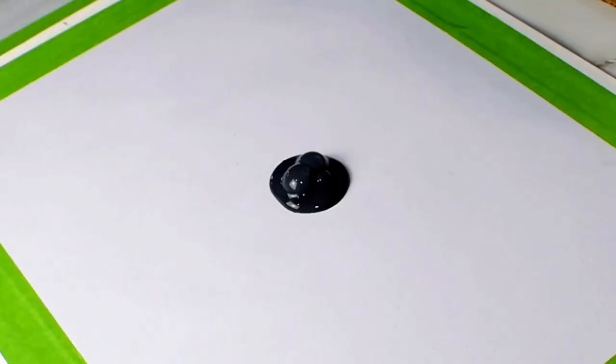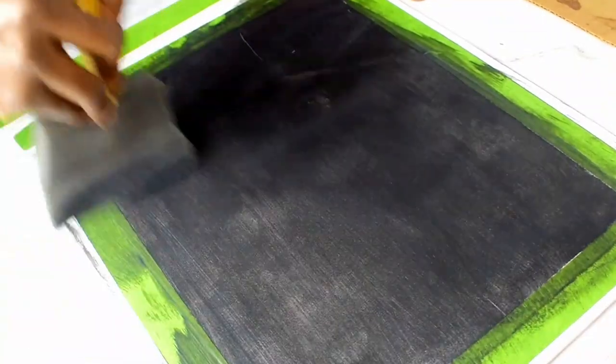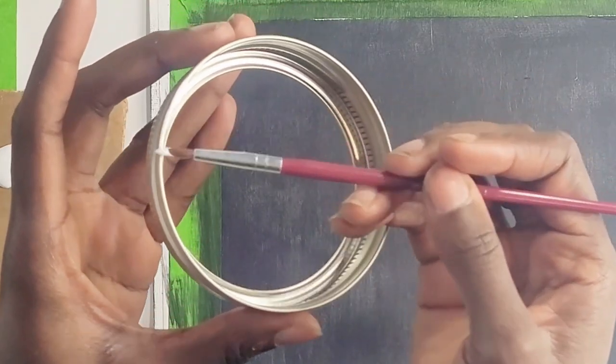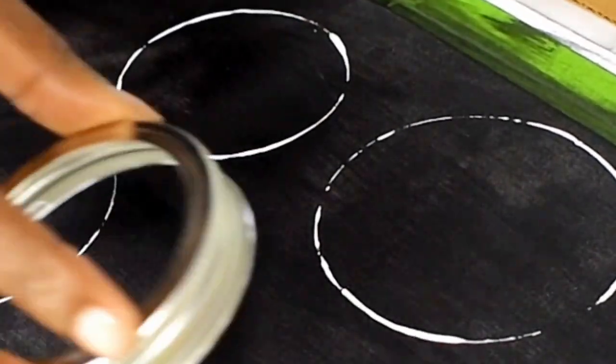How to paint bubbles. Start by painting the background completely black. Then grab a few different size lids and paint the rims white. Press them down onto the background in any pattern.